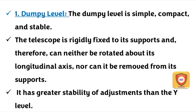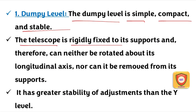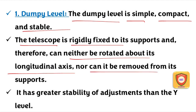First, the Dumpy Level. This instrument is very simple, compact, and stable. The telescope is fixed and will rotate, but it can be removed. That is how you will be able to get along with the balance sheet.